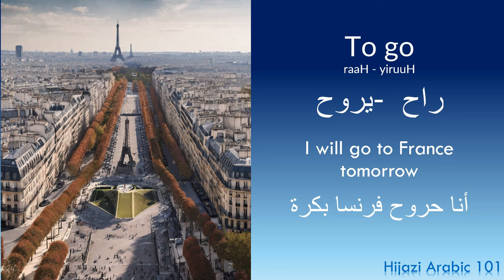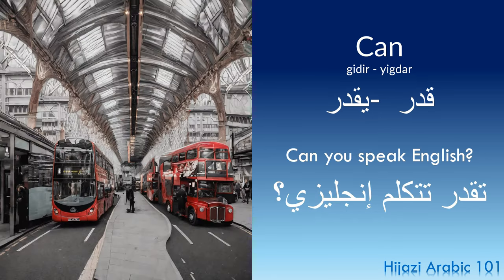To go. Past tense: rah. Present tense: yirouh. Example: 'I will go to France tomorrow' — 'Ana harouh foransa bukra.' The 'ha' in harouh indicates the future tense, and bukra means 'tomorrow.'